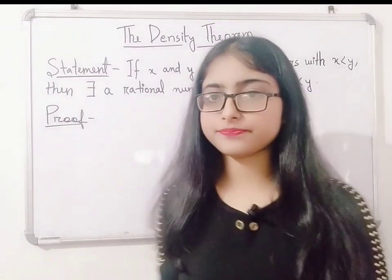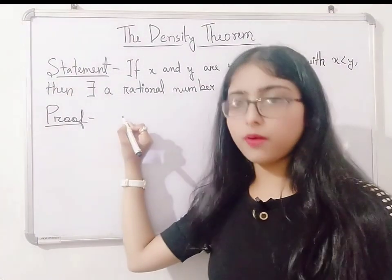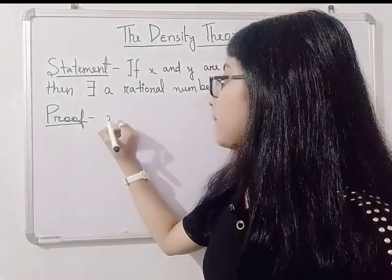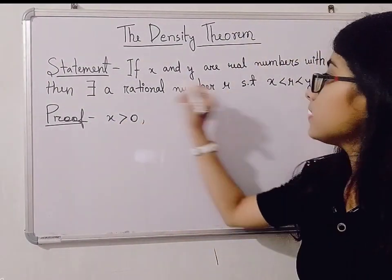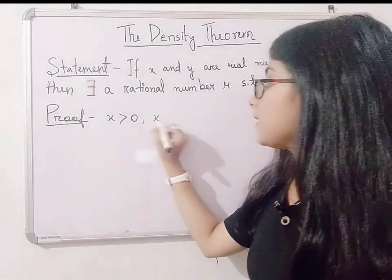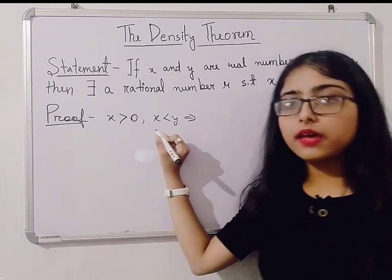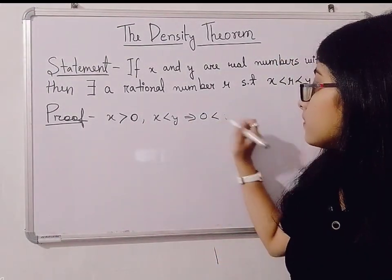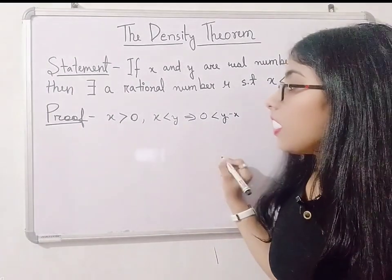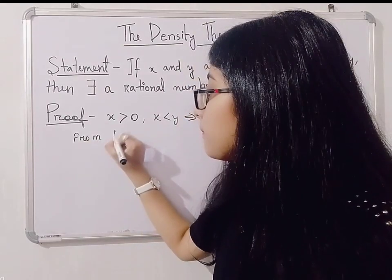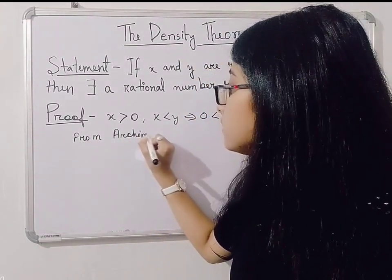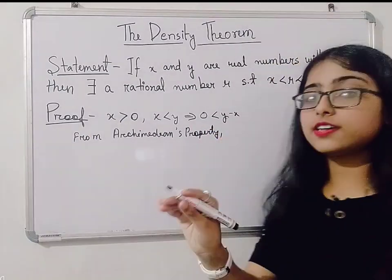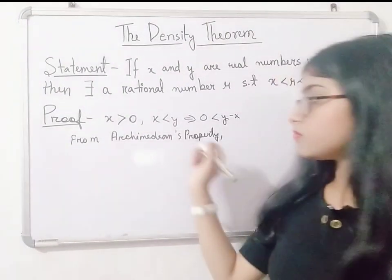So let's prove it. First of all, let's assume that x is greater than 0. You can do it for other cases, but here I am going to take x greater than 0. And here we have x is less than y. Right? Now what I will do is I will subtract x from both sides. So we get 0 is less than y minus x.